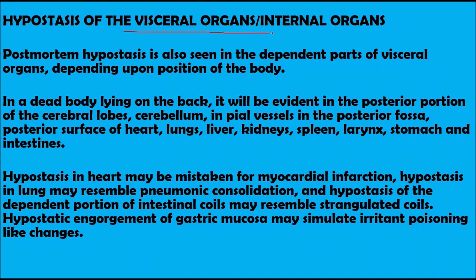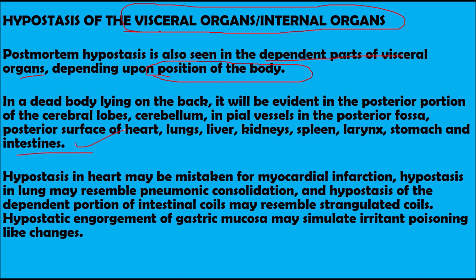Postmortem hypostasis is also seen in dependent parts of the visceral organs, depending on the position of the body at the time of death. In a body lying on the back, hypostasis is evident in the posterior portions of the cerebral lobes, cerebellum, pile vessels, posterior fossa, and the posterior surface of the heart, lung, liver, kidney, larynx, stomach, and intestine.